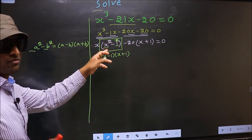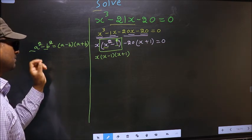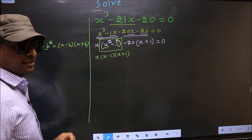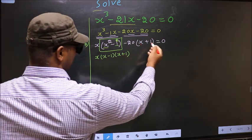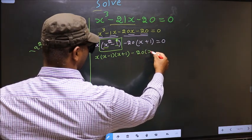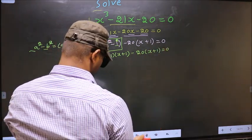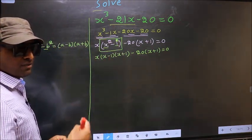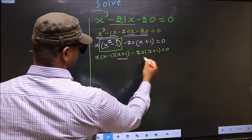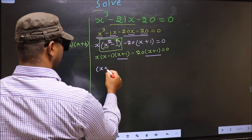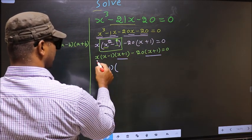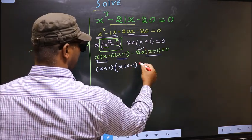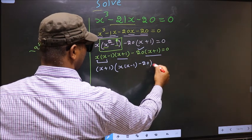On this we applied the formula a² - b² = (a - b)(a + b). Now from the entire equation, what can be taken out common is (x + 1). So (x + 1) is written outside. Over here you are left with x(x - 1), and over here you are left with -20, equal to 0.